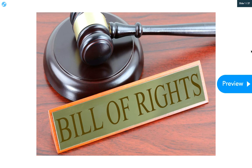The Bill of Rights spells out Americans' individual rights in relation to the government. The Bill of Rights guarantees civil rights and civil liberties — things like freedom of speech, freedom of the press, and freedom of religion. The Bill of Rights also sets rules for due process, which I'll define later in the lecture. It also ensures that any rights not listed in the Constitution are rights that we as individuals still hold. We'll go into more detail about each individual amendment during this lecture.